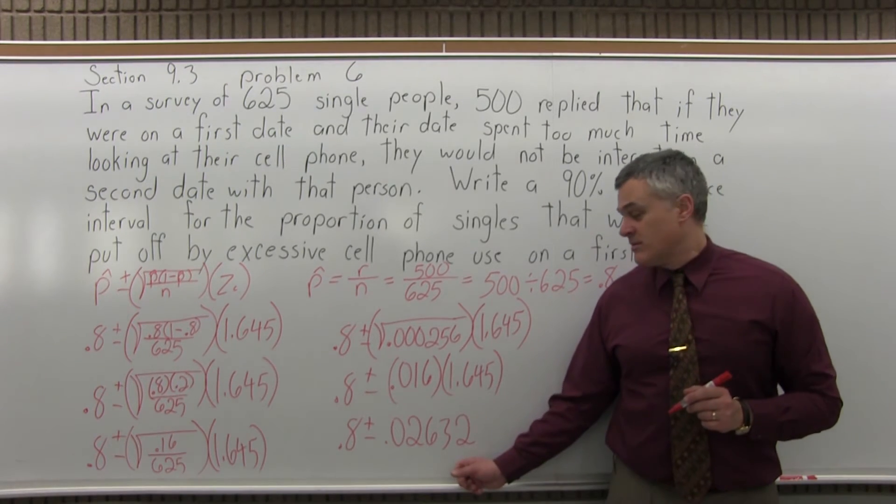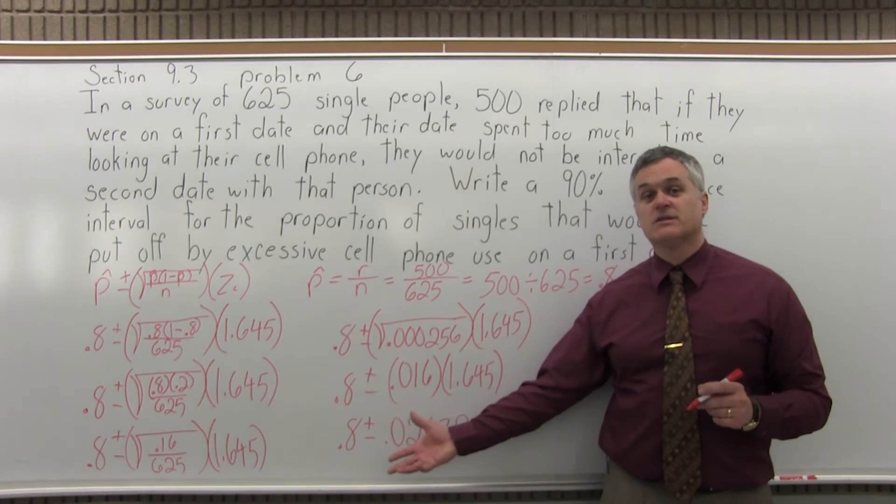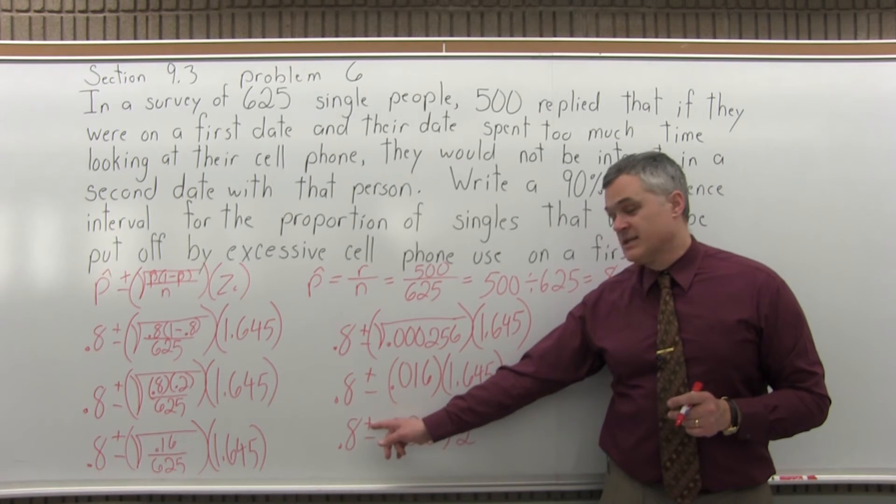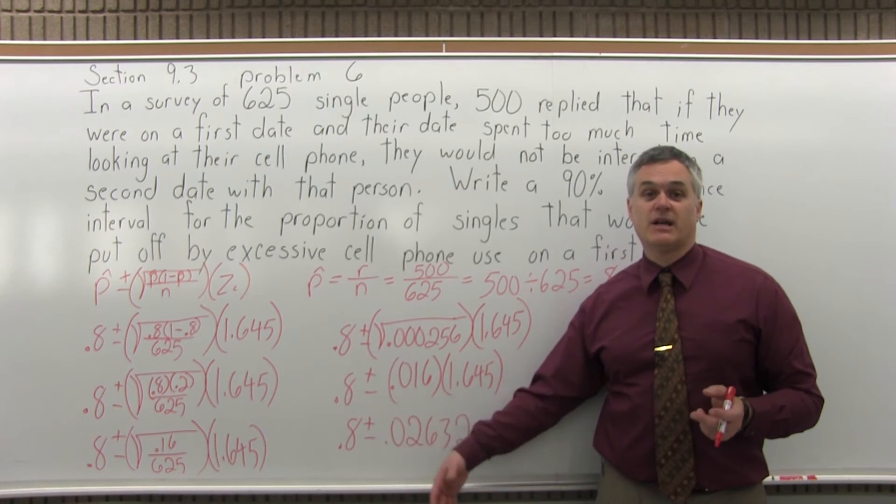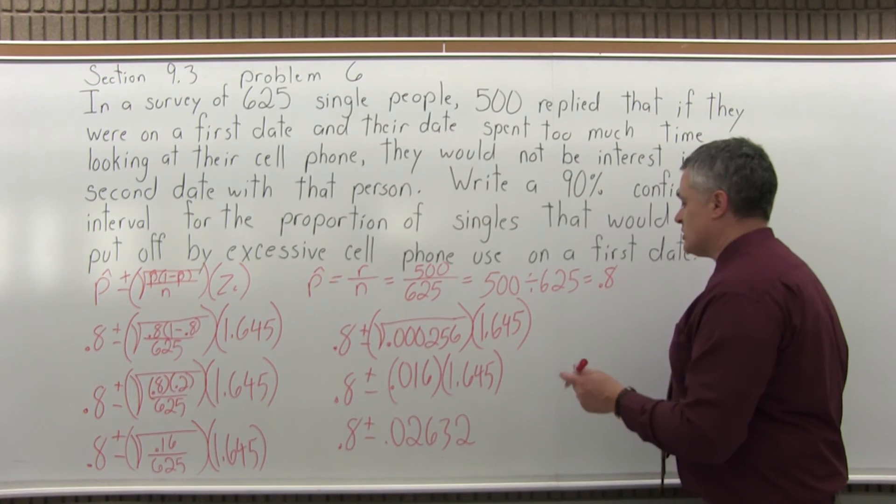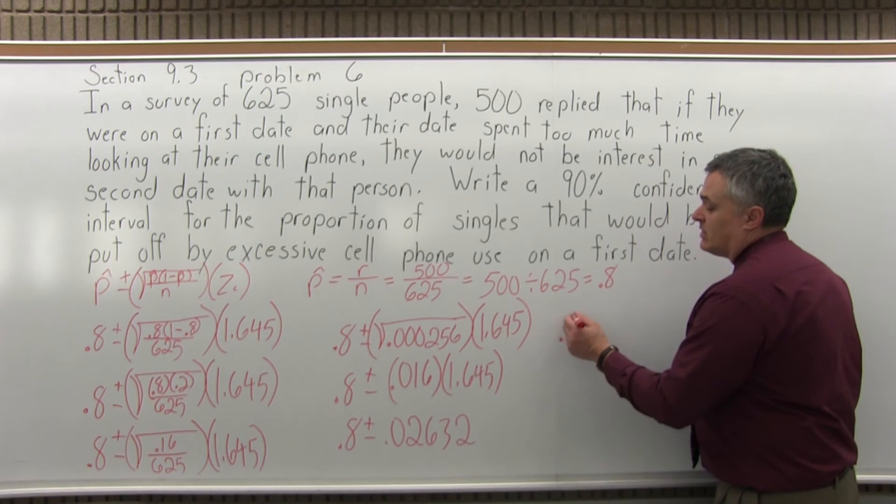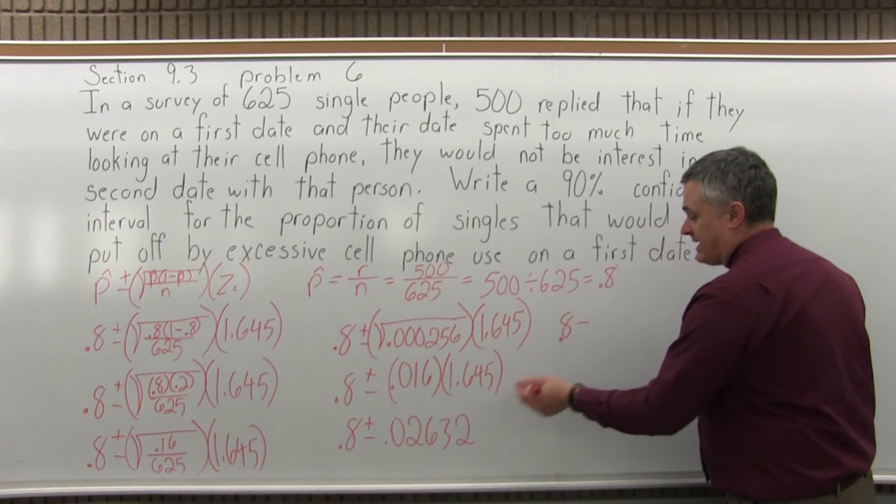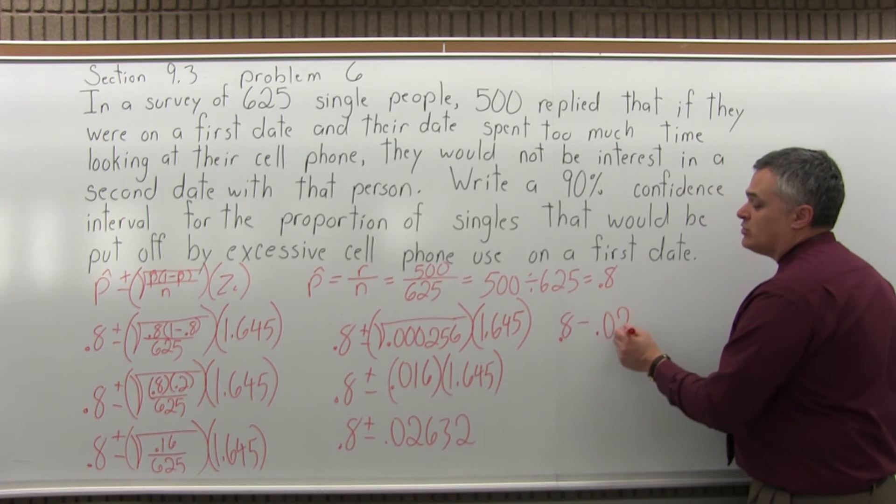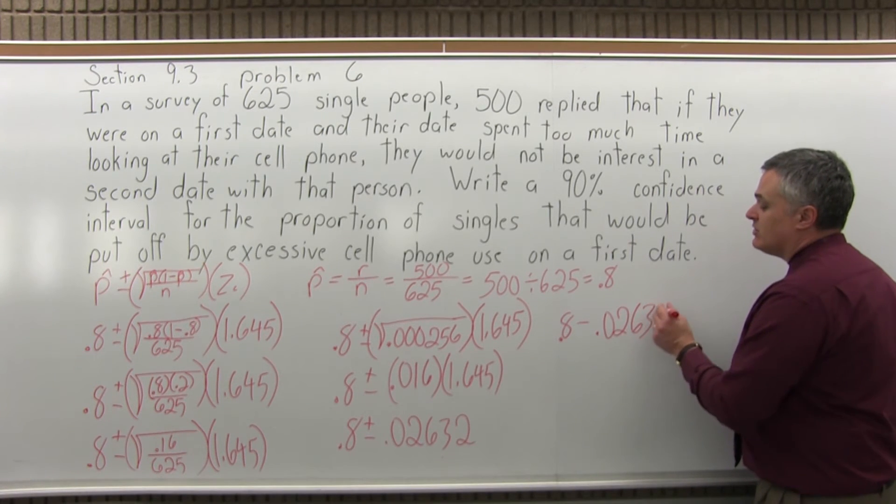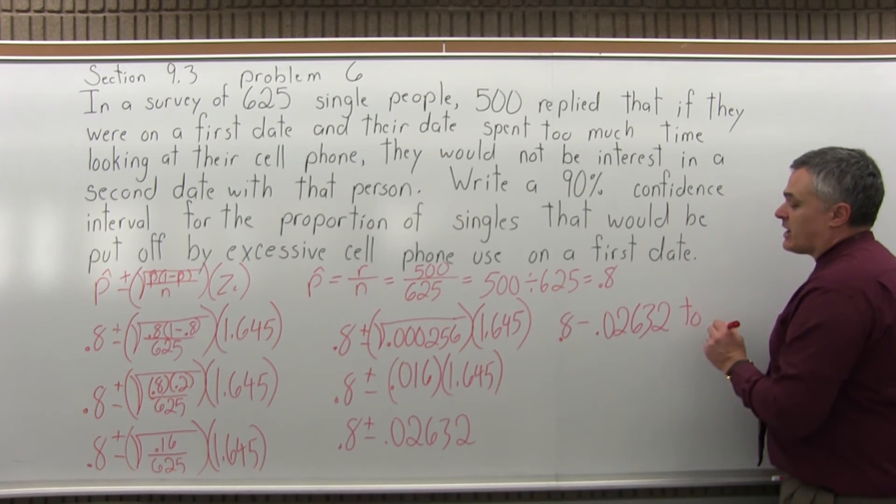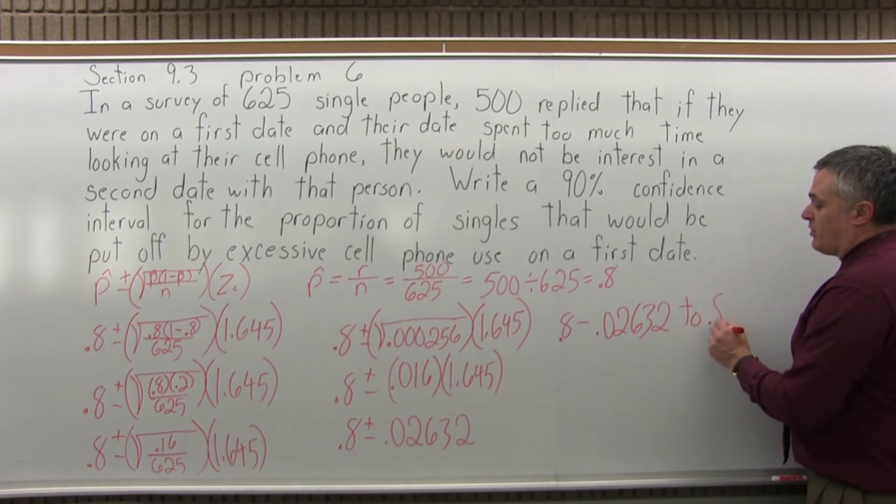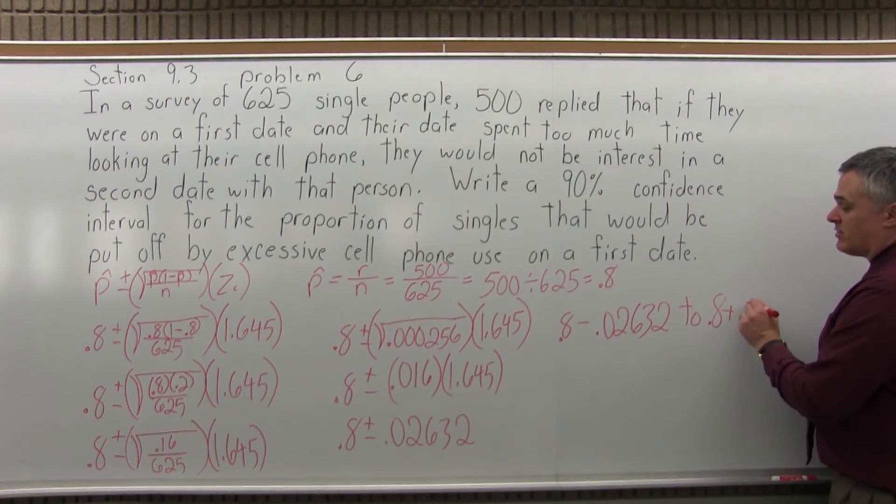So now I have one number after my plus and minus. So now I can split it off into a separate minus and a separate plus to get the low end and high end of my confidence interval. So the low end will come from 0.8 minus 0.02632. And the upper end of my confidence interval will be 0.8 plus the same number, 0.02632.